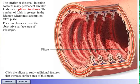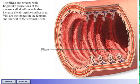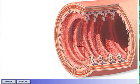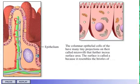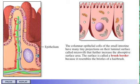The plicae are covered with finger-like projections of the mucosa called villi, which also increase the absorptive surface area. Villi are longest in the jejunum and shortest in the terminal ileum. The columnar epithelial cells of the small intestine have many tiny projections on their luminal surface called microvilli, that further increase the absorptive surface area. This surface is called a brush border because it resembles the bristles of a hairbrush.